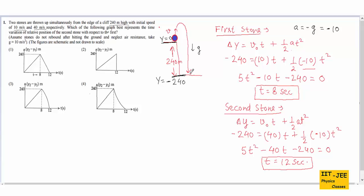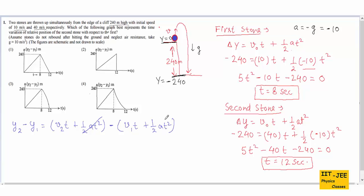So the first stone is in the air for 8 seconds and the second for 12 seconds. Now let's derive the equation for y2 minus y1. y2 equals v2·t plus half·a·t², and y1 equals v1·t plus half·a·t². The half·a·t² terms cancel out. With v2 equals 40 and v1 equals 10, we get y2 minus y1 equals 30t.